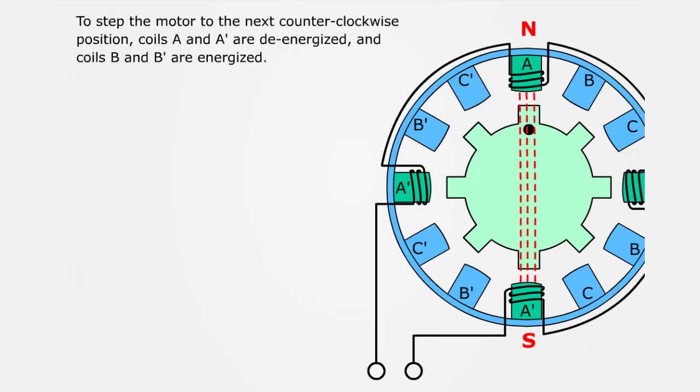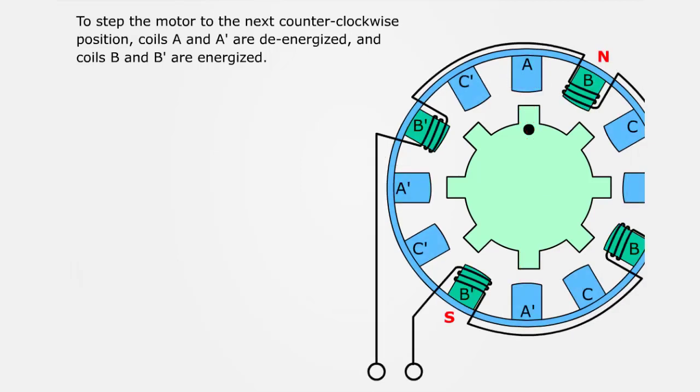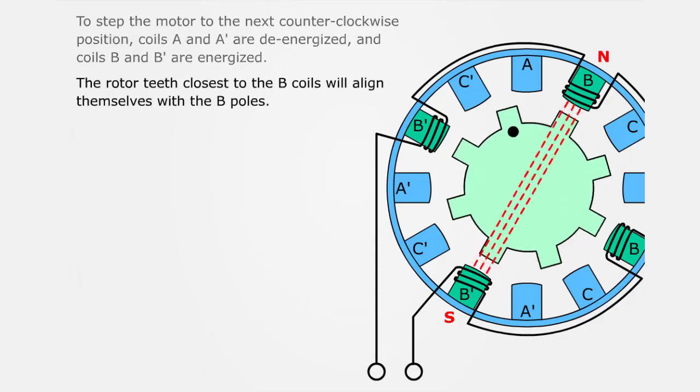To step the motor to the next counterclockwise position, coils A and A' are de-energized, and coils B and B' are energized. The rotor teeth closest to the B coils will align themselves with the B poles.